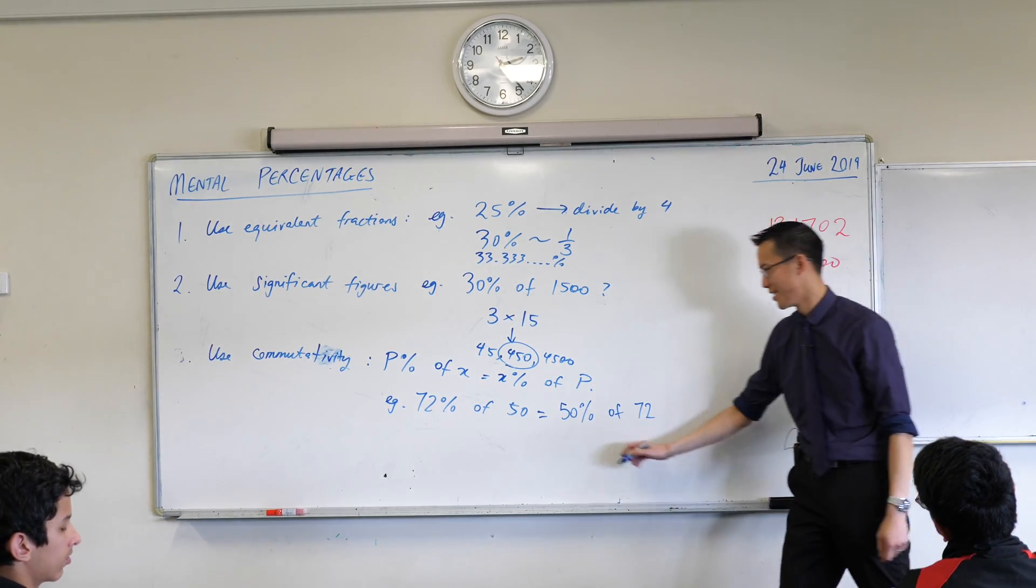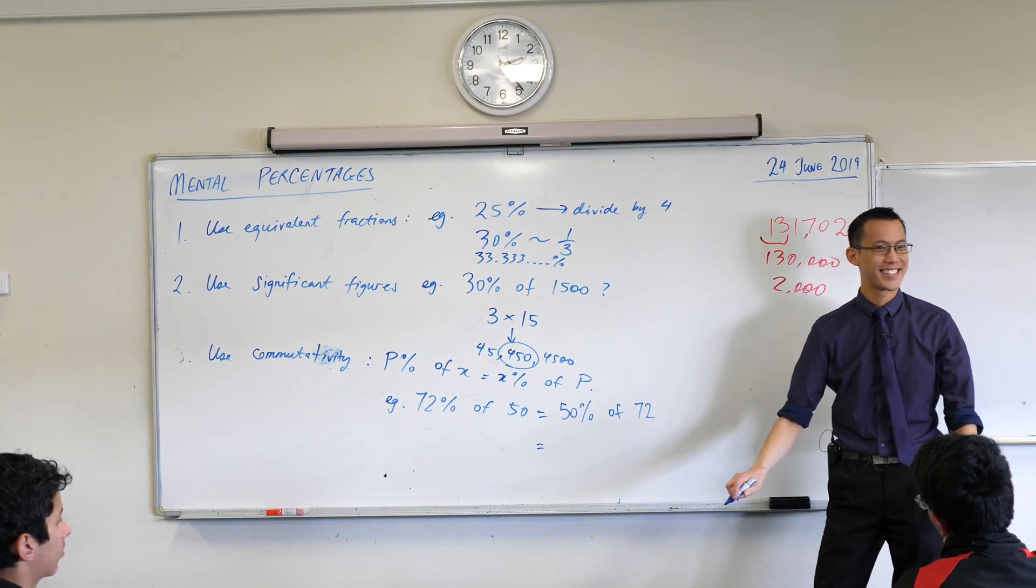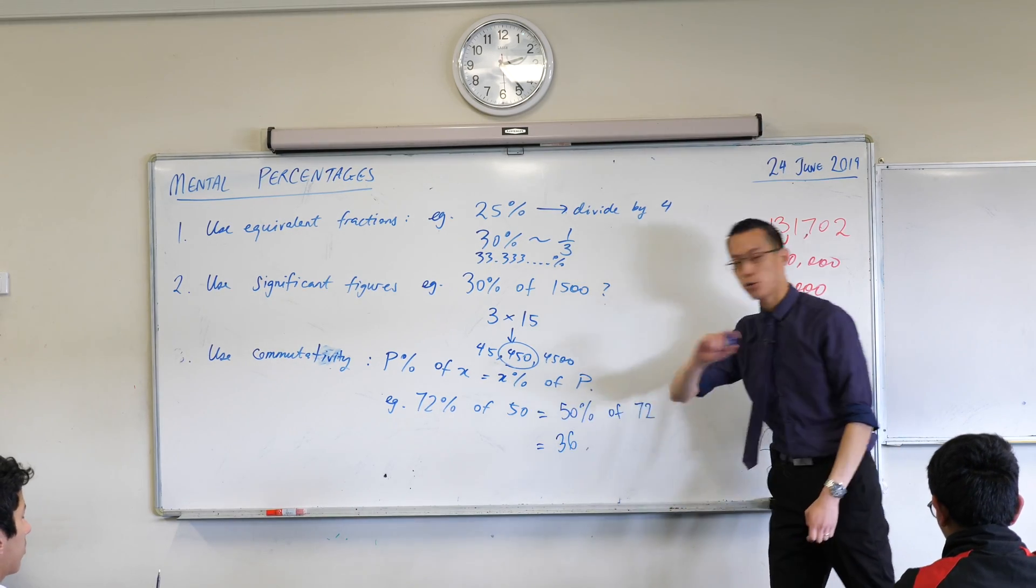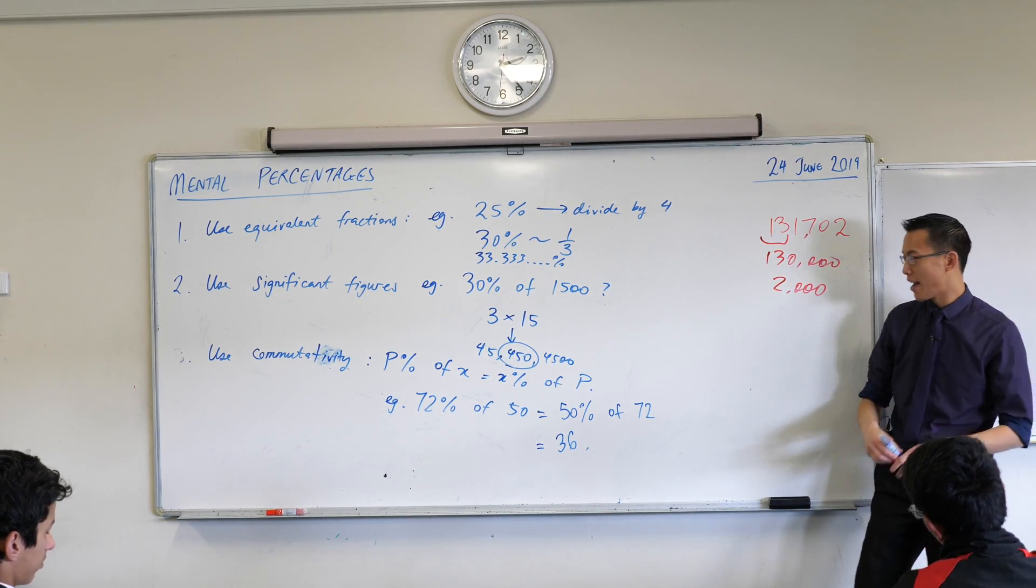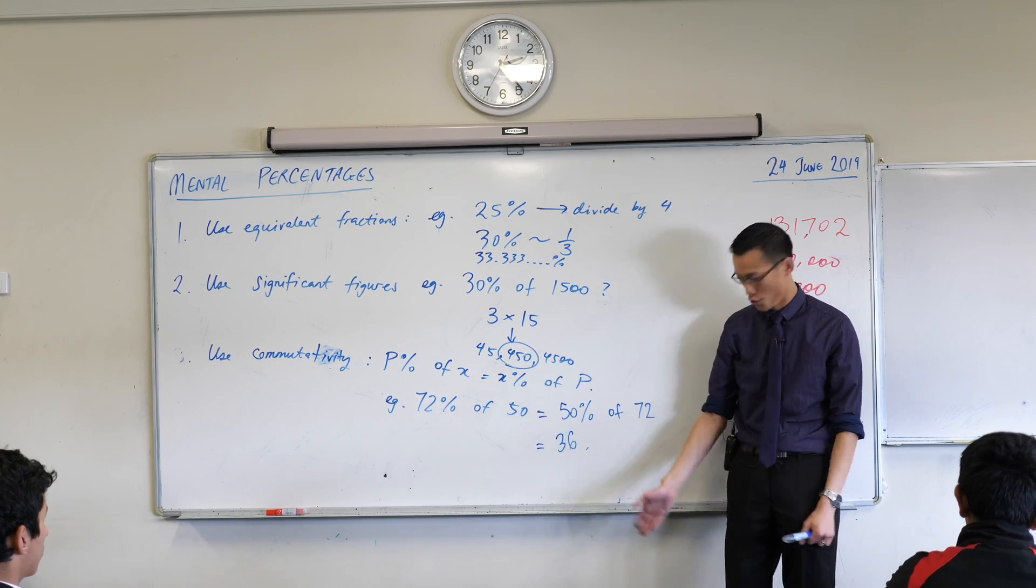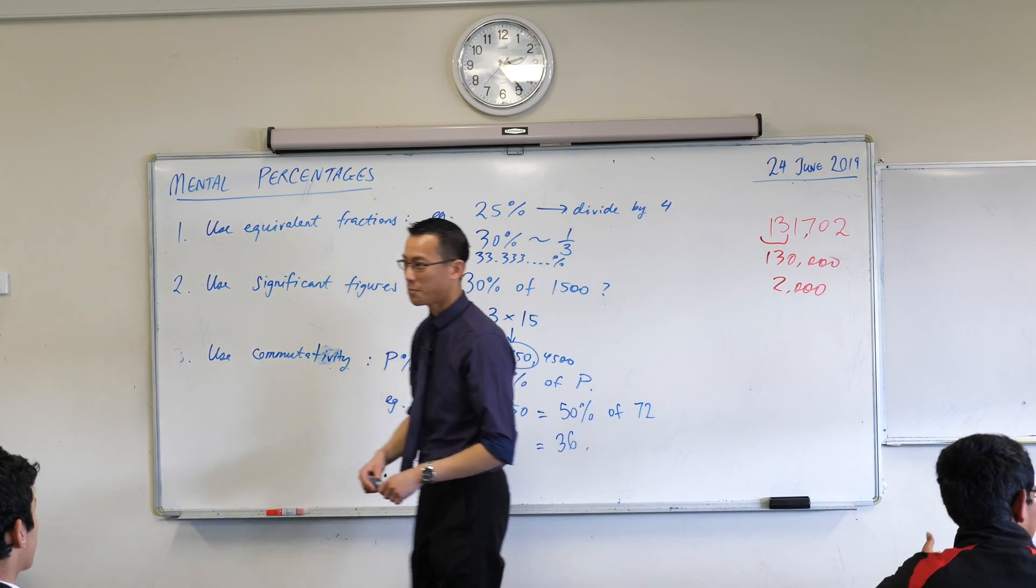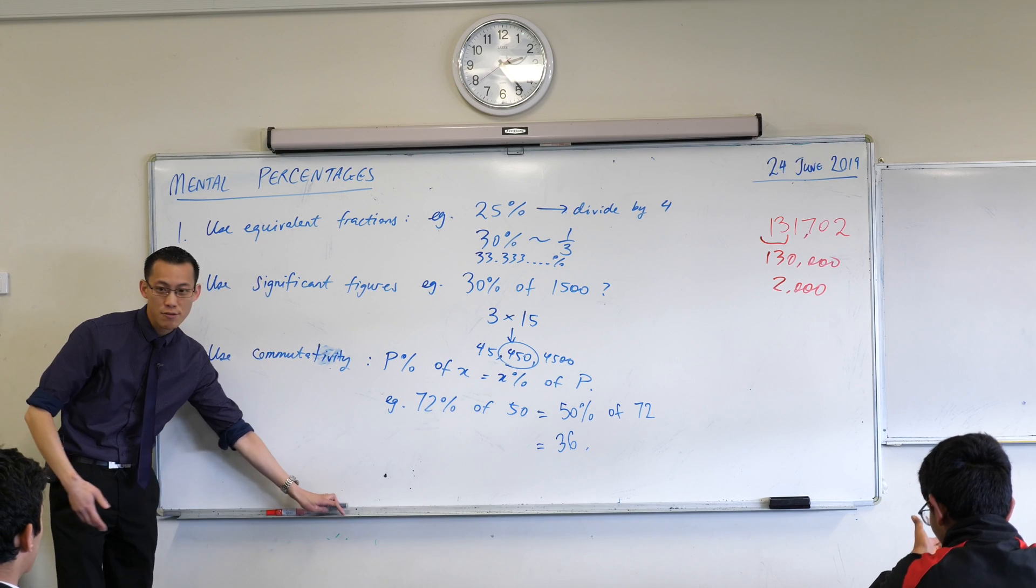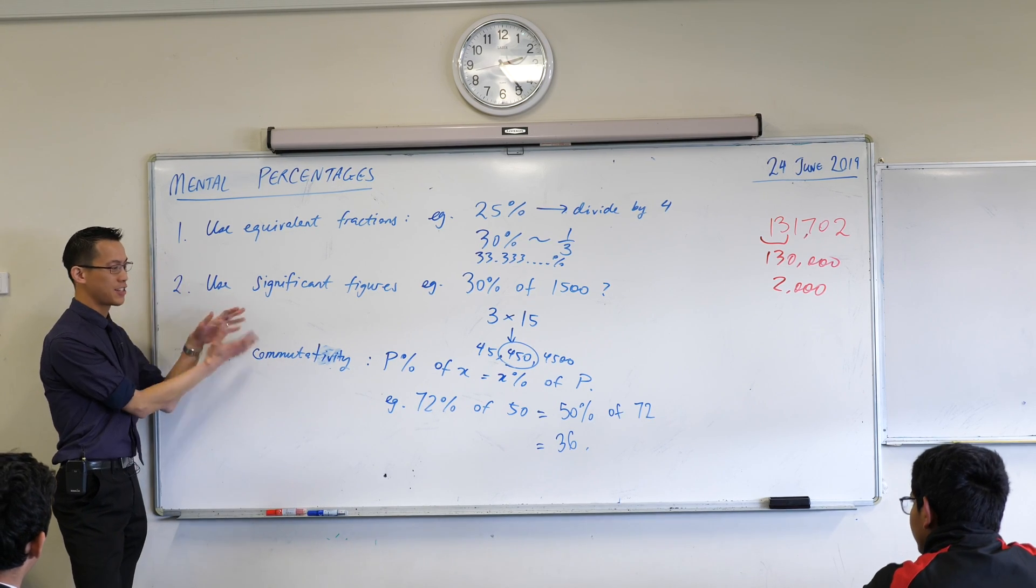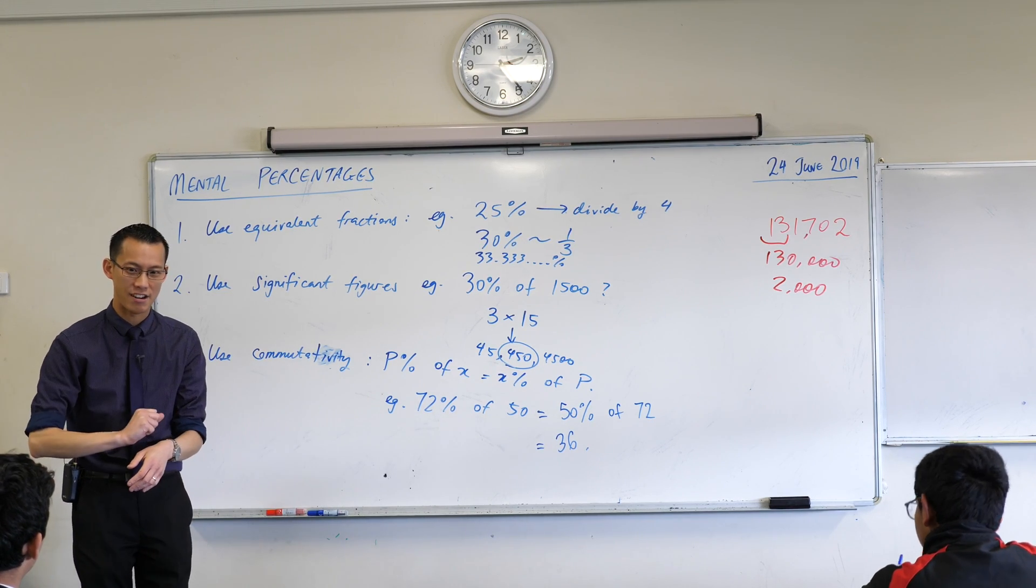Someone tell me what half of 72 is. It's 36. Which if you like, you can go to your calculator and verify. If you punched in 72% times 50, you would get 36 as well. So here are these three really handy techniques that you can use mentally to not have to require you to get a calculator out.